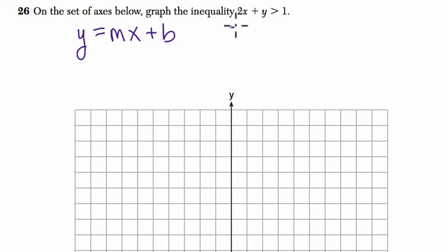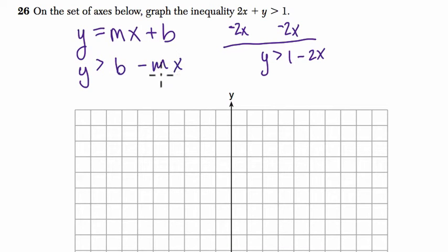So I'm going to isolate y. I'm going to do that by subtracting 2x from both sides, and then I know that y is greater than 1 minus 2x. So this is like mx plus b form, which is just written where y is greater than b minus mx. Same idea, we're just subtracting. I'm using the greater than sign.